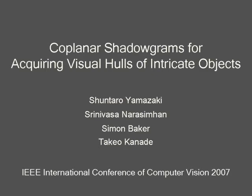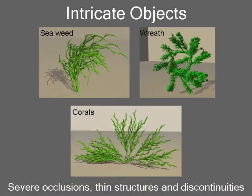Many real-world objects such as wreaths, plants, corals, and insects have intricate shapes. They exhibit severe occlusions and numerous thin structures and discontinuities. Automatically acquiring complete 3D models of such objects is important for computer graphics applications.